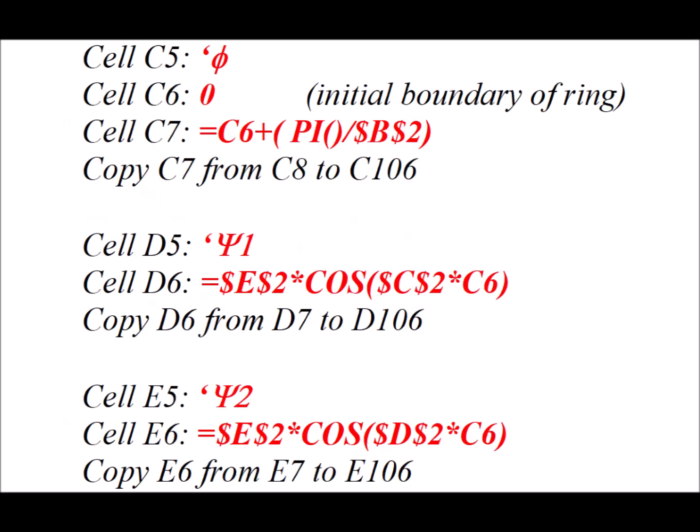So in cell C5, we type apostrophe φ. To make the Greek letter, we simply type in the Roman small f, and then change it to the symbol font. Cell C6 is the number 0, so that's the lowest value of φ. When we begin our sweep around, in cell C7 equals C6 plus π divided by dollar sign B, dollar sign 2, so that's going to increment the value of φ. And then by copying C7 from C8 to C106, that will give us all the values to go one complete revolution around the ring.